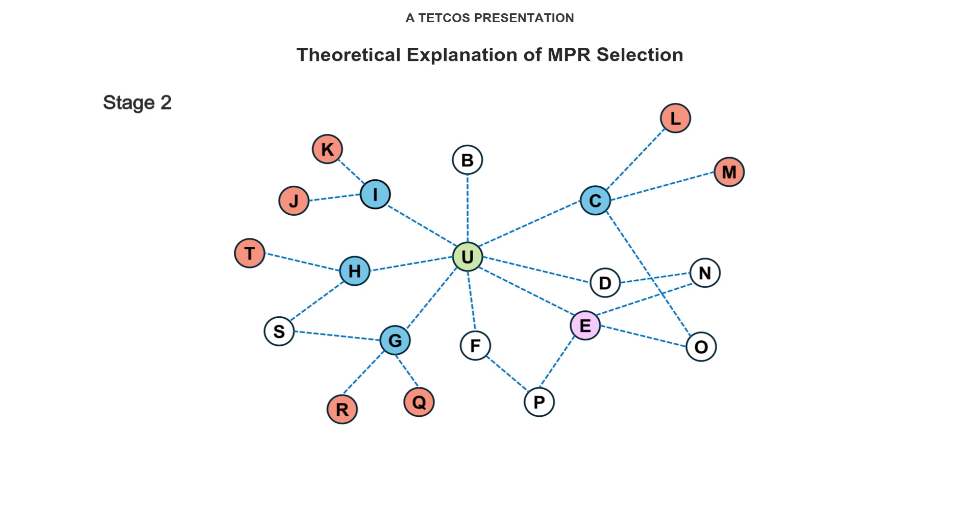In the second stage, the process considers the 2 hop neighbors of node U that remain uncovered, specifically nodes P and N, along with the 1 hop neighbors that have not been selected as MPRs, such as nodes B, F, E, and D. The selection focuses on nodes with the highest degree of connectivity. For instance, node E is chosen because it covers both nodes N and P, whereas nodes F and D each cover only one 2 hop neighbor of node U. This approach to MPR selection is based on maximizing the coverage of 2 hop neighbors while minimizing the number of MPRs by prioritizing nodes with a larger degree of connectivity.